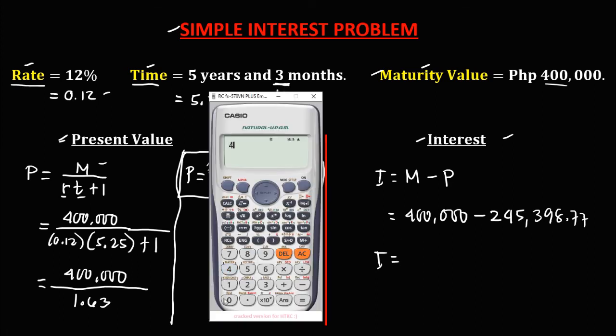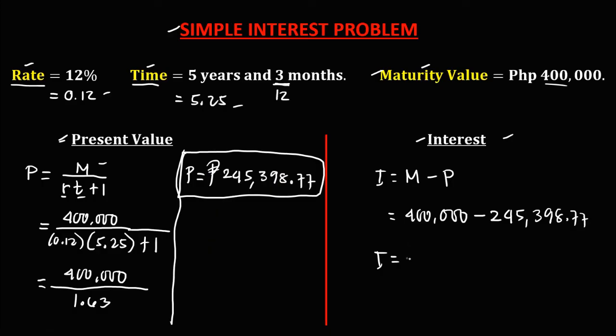So we have 400,000 minus 245,398.77 equals, so the interest is 154,601.23. So this is the interest.